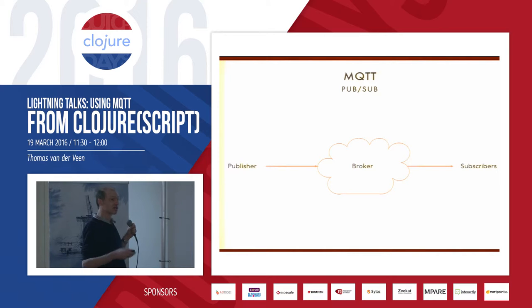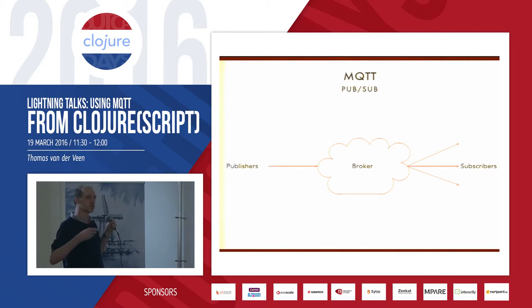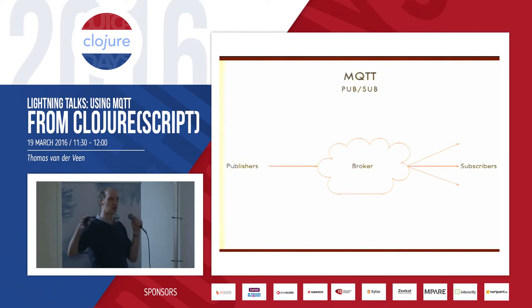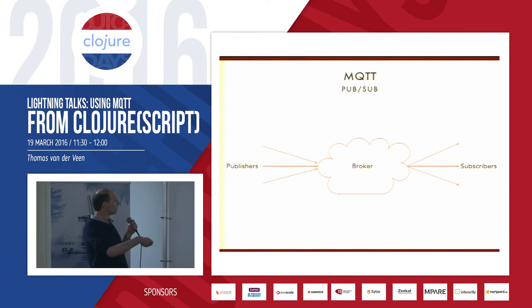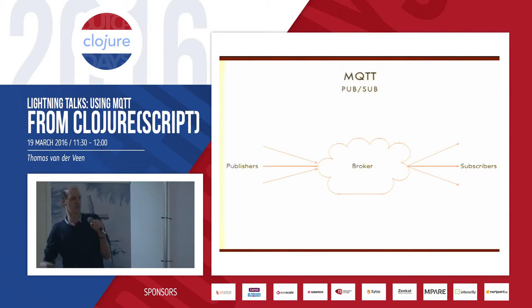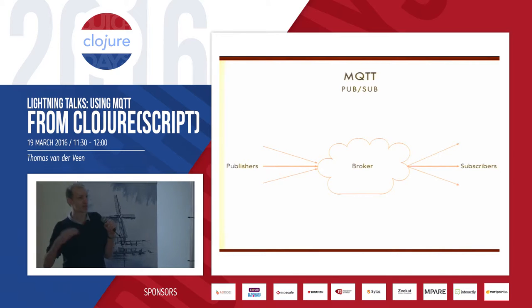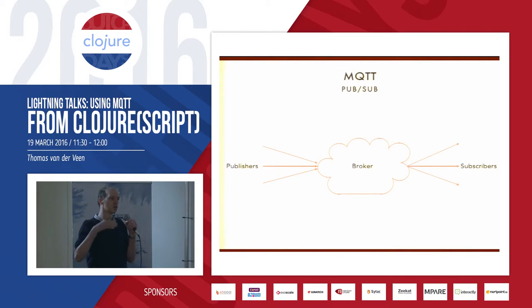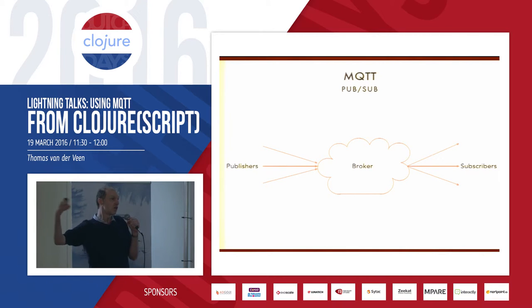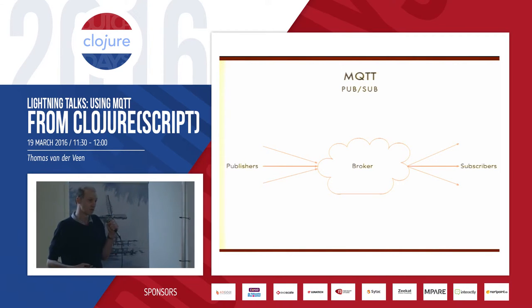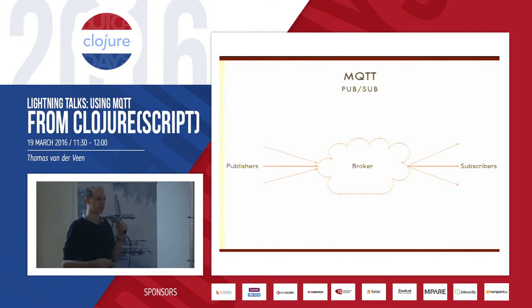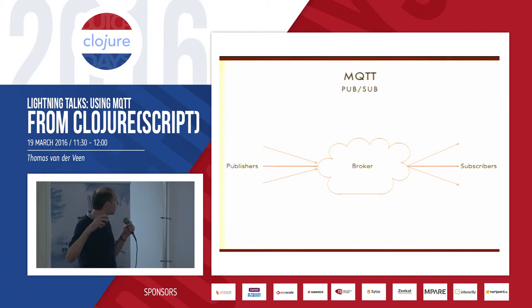The nice thing about this is if you have multiple subscribers, your publisher doesn't need to know about that — you decouple that. And the same thing if you have multiple publishers; your subscribers don't need to know about that. Sometimes you use REST for everything, but one of the problems with REST is you still couple the connection between the client and the server. If you use a messaging technology, you decouple that even more.